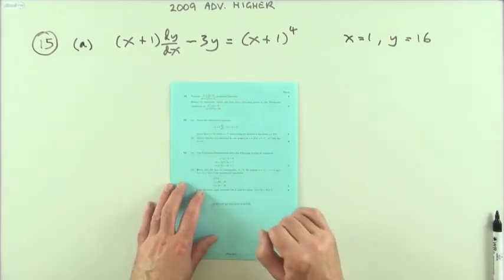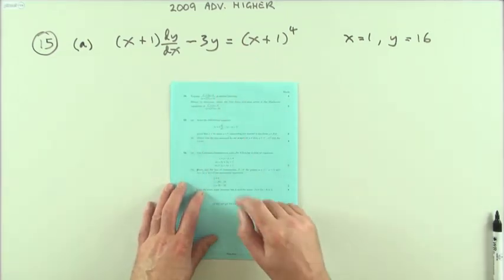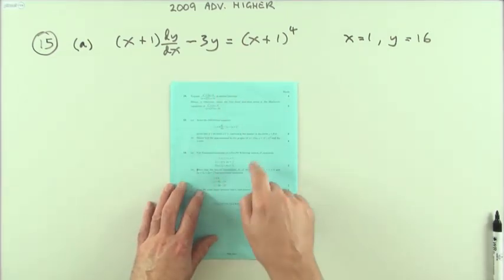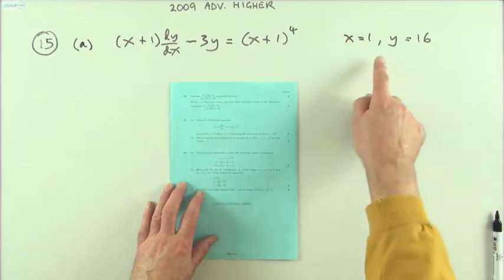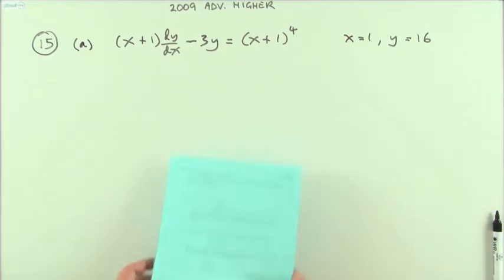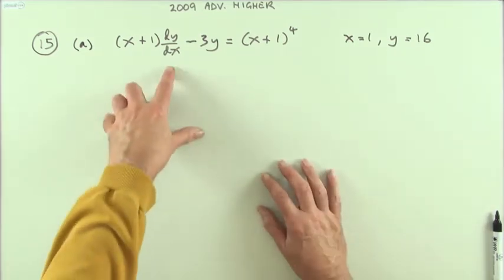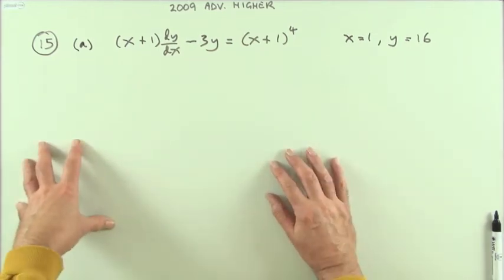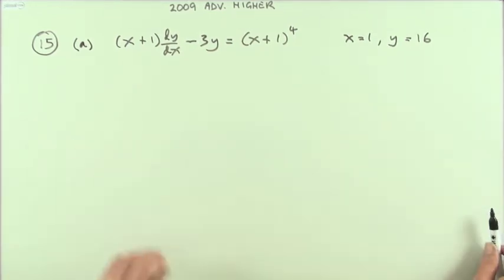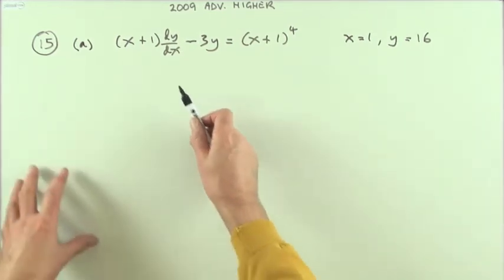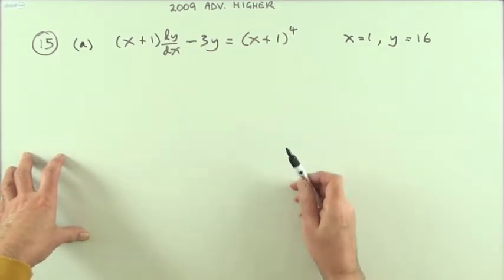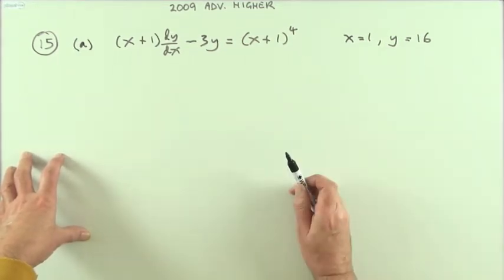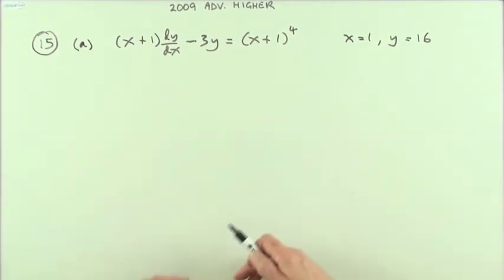Number 15 from the 2009 paper: solve the differential equation given these initial conditions. What kind of equation have we got? Well it's just a first order one but it's not a separable type. That's because what we've got here is the integrating factor type, which just means I'm going to be using the product rule for differentiation.